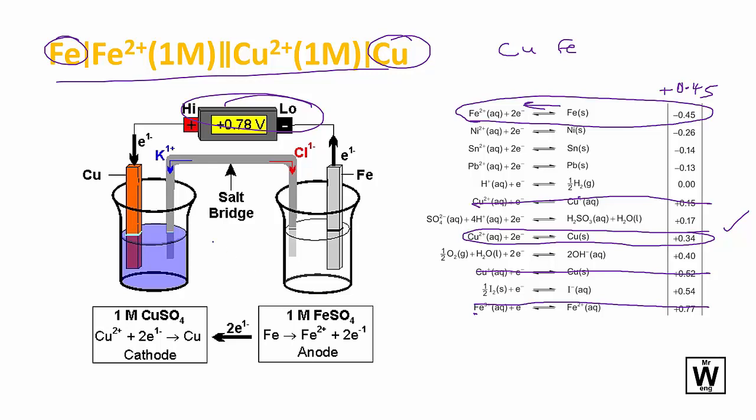Now this one's drawn in the opposite direction, which is fine, but you must make sure that this is now labeled the cathode. The copper is gaining the electrons and the iron is losing the electrons, so the electrons are going in this direction.